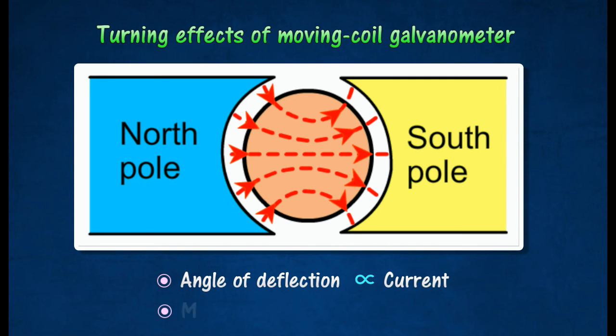The scale of the meter is thus a linear scale, that is a scale where all the divisions are of the same size.